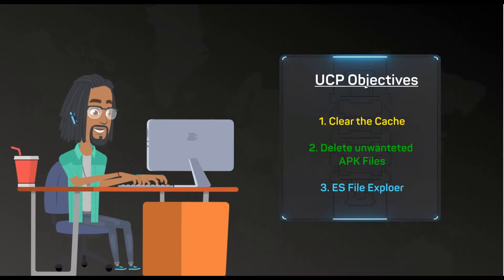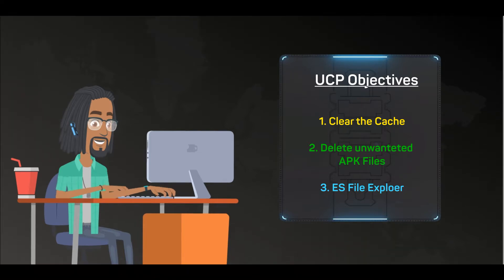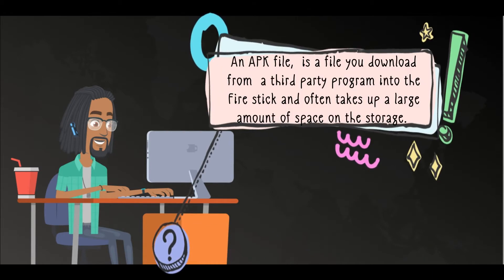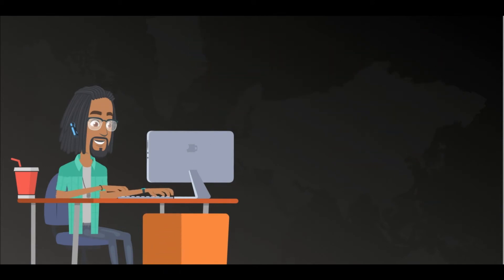Let's get to it. There are three objectives that we'll take on today with your Amazon Fire Stick. First one being Cache. Second, getting rid of unwanted applications that were already installed and third-party applications such as Kodi and Cinema. And finally, APK installers. An APK file is a file you downloaded from a third-party program into the Fire Stick, and often takes up a large amount of space on the storage. A lot of people make the big mistake of installing files, but today I will share with you three objectives to help improve your Fire Stick completely and free up unwanted space. So with that being said, all systems go.